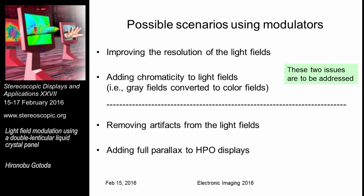There are many scenarios to use modulators. One is to improve the resolution of the light fields; another is to add chromaticity, converting gray monochromatic light fields to color. It might also be possible to remove artifacts, or to add full parallax to horizontal-parallax-only displays. Here, I mainly focus on improving resolution and adding some chromaticity.